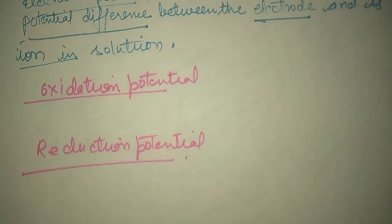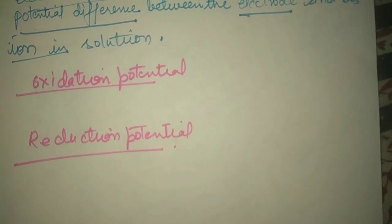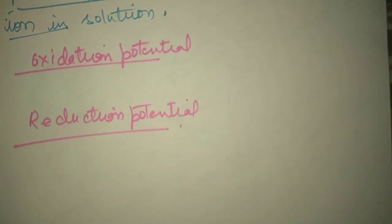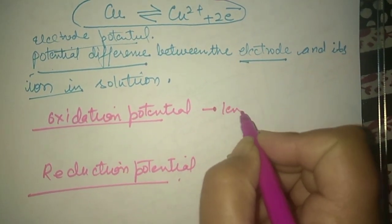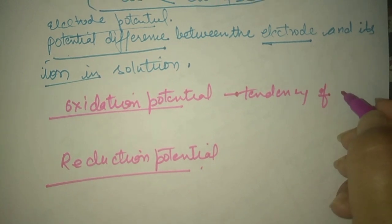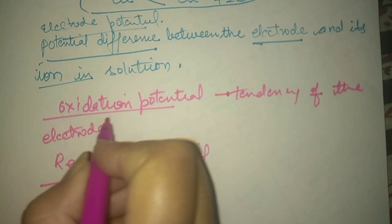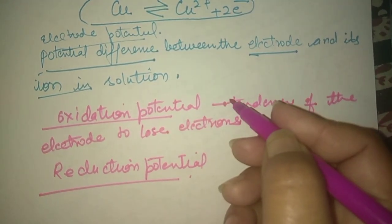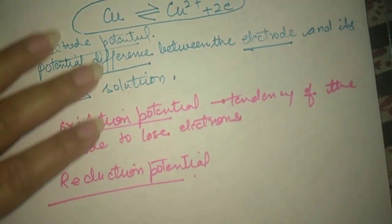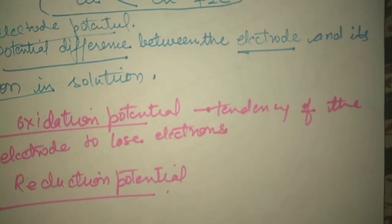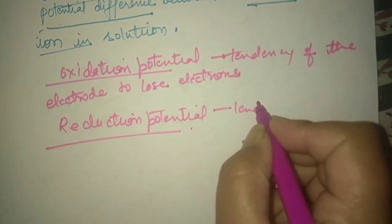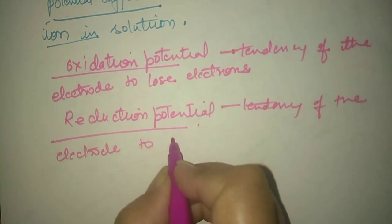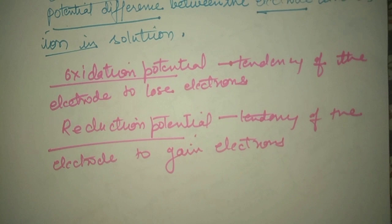What is oxidation potential? It is the tendency of the electrode to lose electrons. And what is reduction potential? It is the tendency of the electrode to accept electrons. When the electrode loses electrons, it acquires a negative charge. When it gains or accepts electrons, that tendency is the reduction potential — the tendency of the electrode to gain electrons.